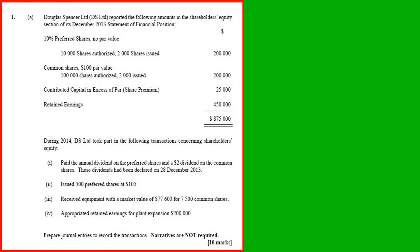We begin with question 1e. Douglas Spencer reported the following amounts in the shareholder's equity section of a December 21st statement of financial affairs. We are given some preferred shares, common shares, and the share premium or capital in excess of par. Retained earnings. And we are told that DS Limited took part in the following transactions concerning shareholder's equity.